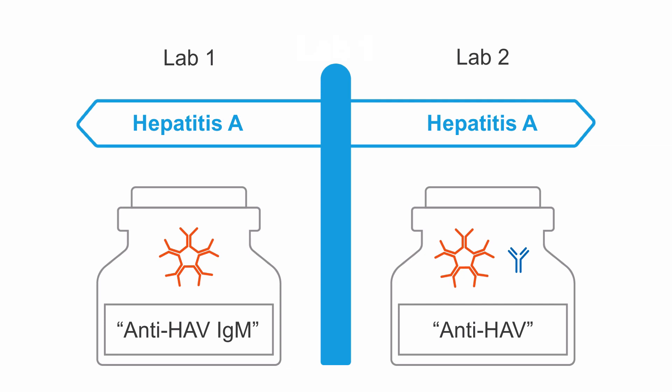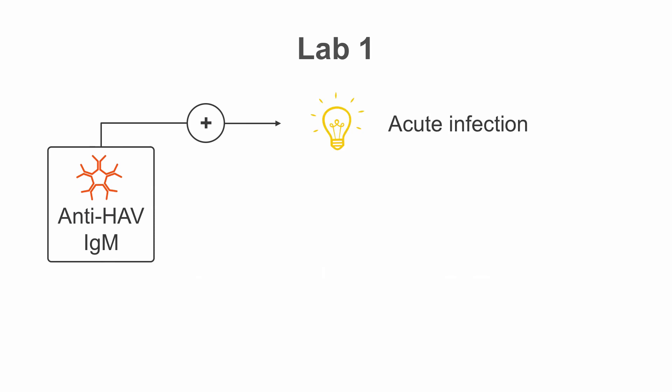When we order hepatitis A testing in lab 1, we first get the results of anti-HAV IgM testing. This is ideal if your clinical question is whether your patient is suffering from an acute hepatitis A infection or not. If the result is positive, then you can confirm that your patient suffers from an acute hepatitis A infection. What happens if the result is negative? First of all, we can exclude an acute infection.